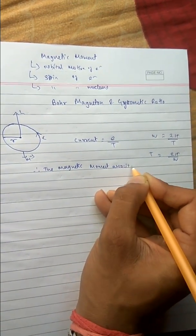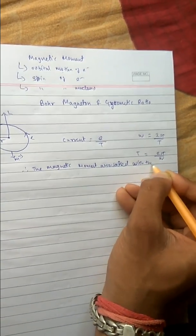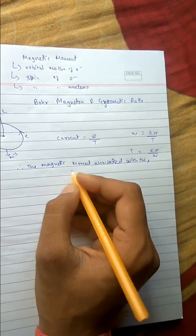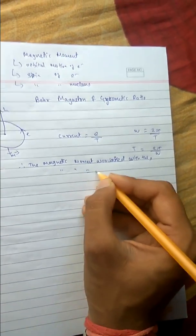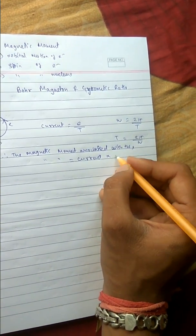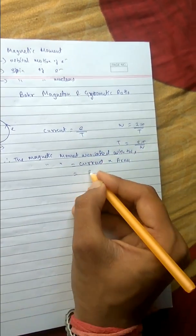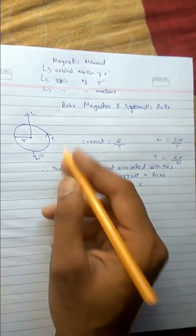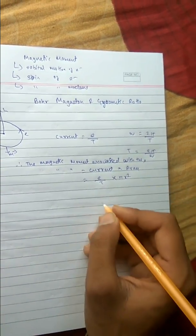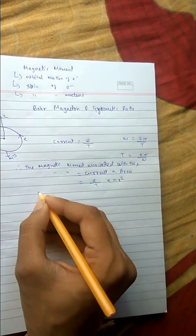The magnetic moment associated with this orbital motion is: magnetic moment equals current times area. The current is e over t, and the area for this circular path is π r squared. So magnetic moment equals (e/t) times π r squared.